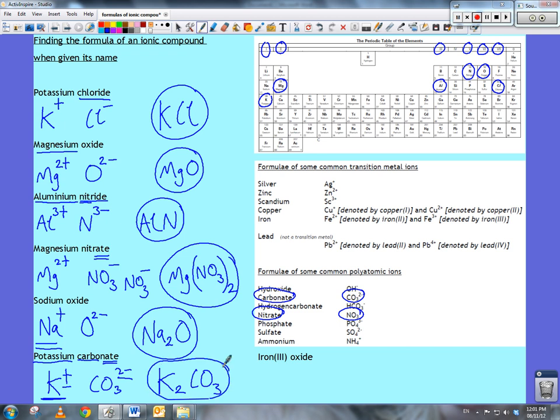And last, but by no means least, we have iron(III) oxide. And this time, we've got those roman numerals inside the brackets after the metal. That's because iron can exist as more than one type of ion. You can see that up here, look, in our little list, the transition metal ions. And the iron(III) means that the iron we're interested in here is Fe3+. And oxide, so O2-.